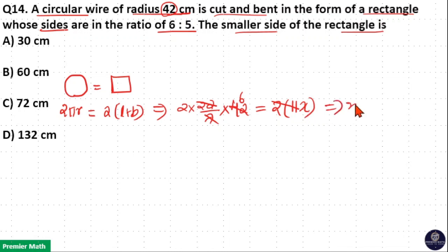So x is equal to 12, which means the smaller side of the rectangle is 5 parts, which is equal to 5 into 12, which is 60. So option B is your answer.